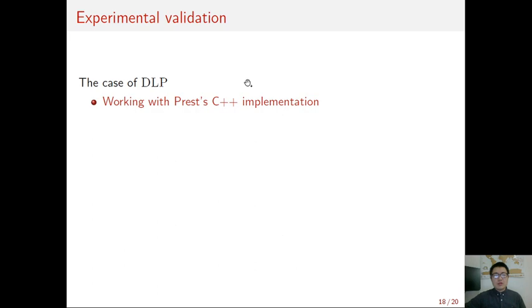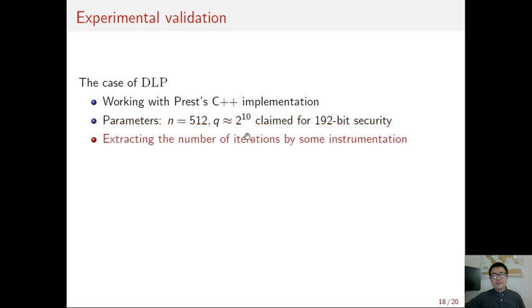For the case of DLP, the implementation we worked with is proposed by Thomas Prest and written in C++. And the parameter set we consider is claimed for 119 quantum bits of security, in which n equals 2^9 and the modulus q is about 2^{10}. And to measure the number of loop repetitions, we simply add some instrumentation in the code. And this step can be replaced by some standard side-channel attacks, like cache timing attacks.